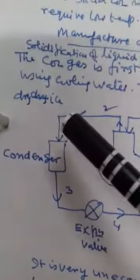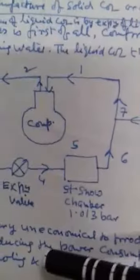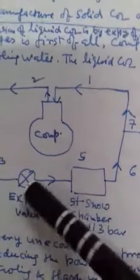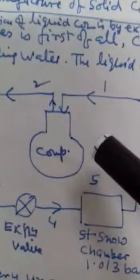In this part, liquid CO2 at point 5 is taken out. From 6 to 7, makeup CO2 gas is supplied because part of the CO2 has been solidified and taken out. Makeup of the CO2 is being done at point 7, and then it goes again to the compressor. So this is the process: compressor, condenser, expansion valve, and snow chamber. The snow chamber is at 1.013 bar pressure. At point 7, makeup CO2 is being added, and then it is compressed again.